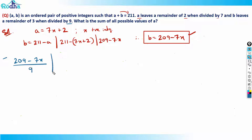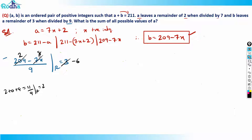Now, 209 minus 7x divided by 9 must give a remainder of 3. The remainder of 209 divided by 9 is found by adding digits: 2+0+9 = 11, and 11 divided by 9 gives remainder 2. So I need 2 minus (remainder of 7x ÷ 9) to equal 3. Converting 3 to a negative remainder gives minus 6, so 7x divided by 9 must give remainder 8, since 2 minus 8 = minus 6.